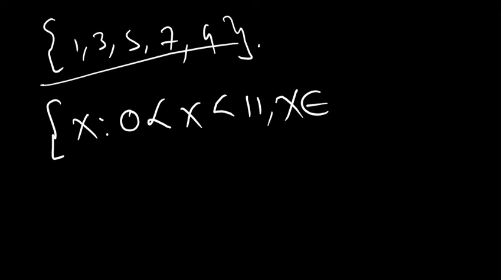So we are saying that {1, 3, 5, 7, 9} are odd numbers. If we removed 9 it would be prime numbers. We write: x such that 0 < x < 11, and x is a member of the odd numbers.